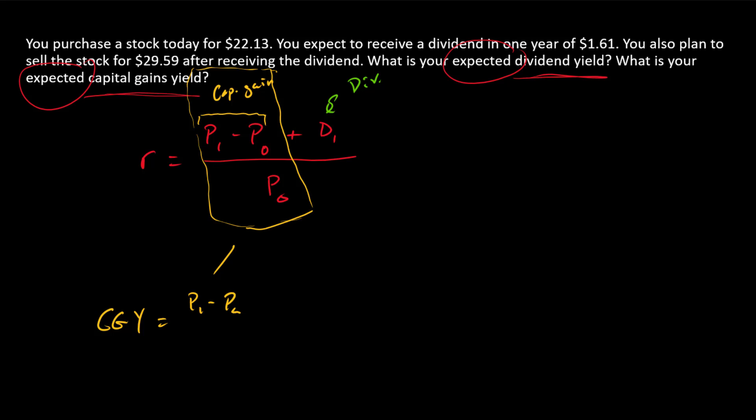And so the capital gains yield is equal to p1 minus p0 over p0. Which in this problem is 29.59 minus 22.13 divided by 22.13. And this is a little over 33%, so 0.3371 is the capital gains yield. So that's the answer for the capital gains yield.